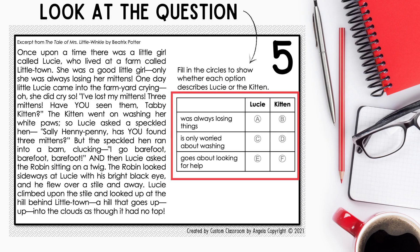First, let's look at the question and table. Fill in the circles to show whether each option describes Lucy or the kitten. The options are: was always losing things, is only worried about washing, and goes about looking for help. So now we know we need to think about Lucy and the kitten while we're reading.